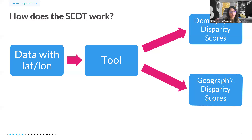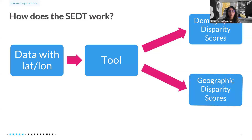The tool compares the user's uploaded dataset to the American Community Survey (ACS) and the counts for various populations at a user's chosen geography. This can include four geography levels: city, county, state, and national level. After uploading your dataset, the tool automatically calculates two types of scores — a demographic and a geographic disparity score. The web tool automatically generates two visualizations and datasets that users can download, and the API provides these calculations in a flexible-to-use format.